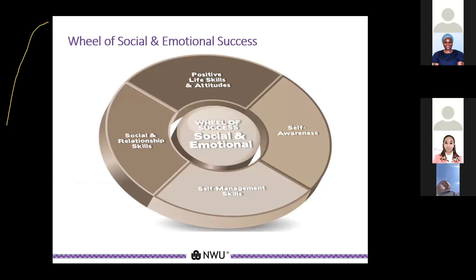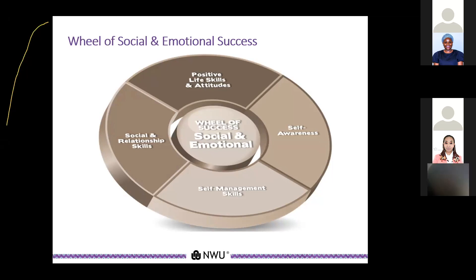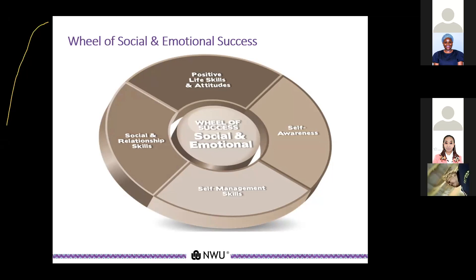The social and emotional wheel covers positive life skills and attitudes, which refers to having happiness or striving for balance, self-awareness and being aware of your strengths, weaknesses and biases, and self-management referring to being able to have self-regulation and the discipline to do your studying. It also includes social and relationship skills — being able to maintain healthy relationships, engaging with your peers, and having good intrapersonal and interpersonal communication skills.